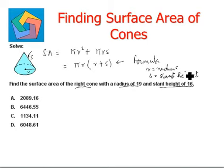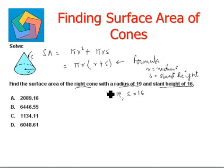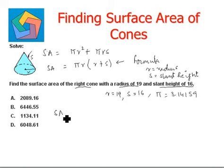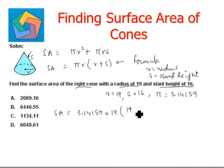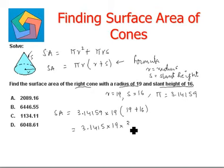From the question, we are given radius r = 19 and slant height s = 16. We plug these values into the formula. SA = π × r × (r + s), where π = 3.14159. So: SA = 3.14159 × 19 × (19 + 16) = 3.14159 × 19 × 35.